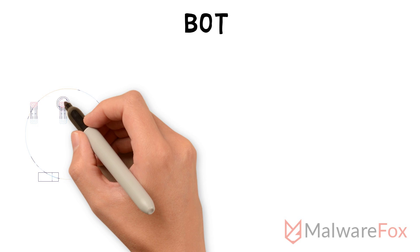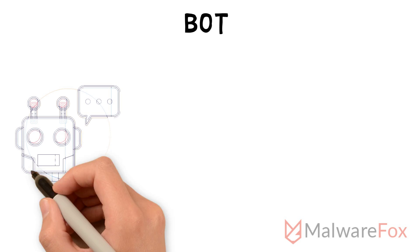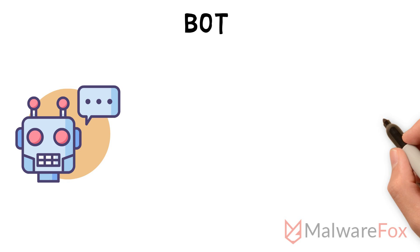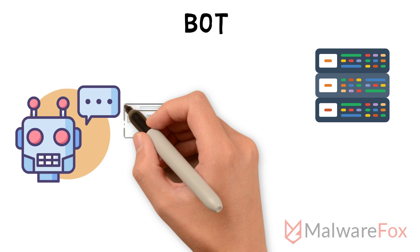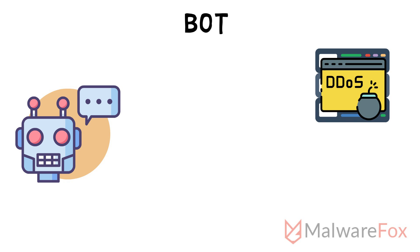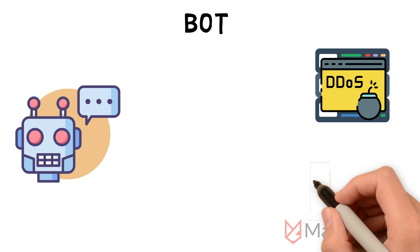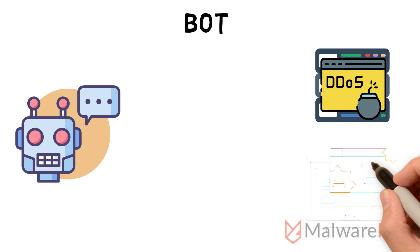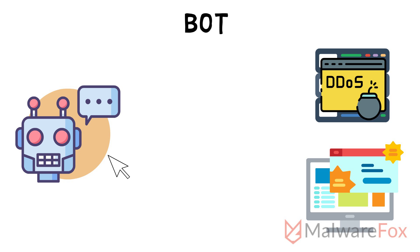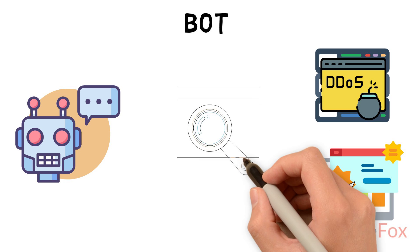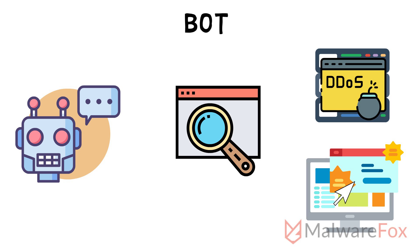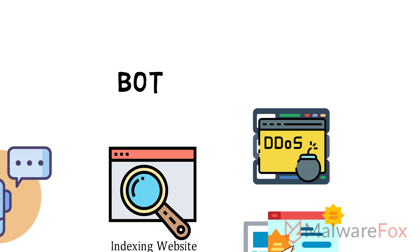Bot: Bots are created to perform a series of actions automatically. They are used to perform DDoS attacks to get access to servers. Also, bots can be used to auto-render and generate clicks on ads to benefit their creator. Bots are also used for useful purposes such as indexing websites for better search results.